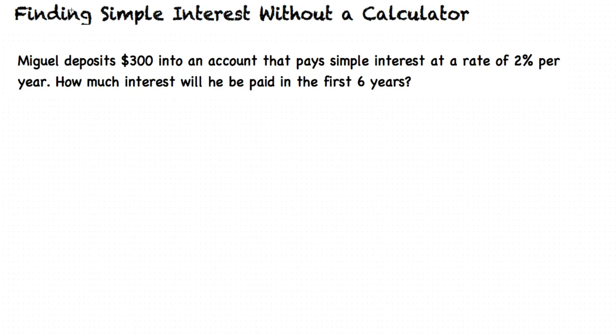First, we need to identify the initial amount. The problem tells us that Miguel deposits $300, so we know that he has put an initial amount of $300 into the bank.